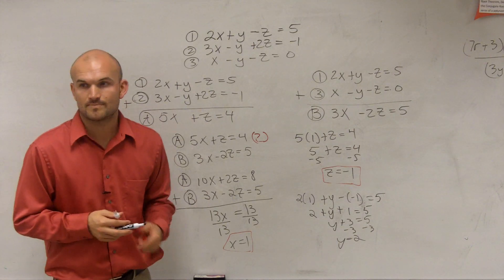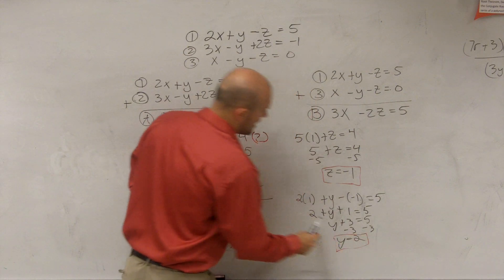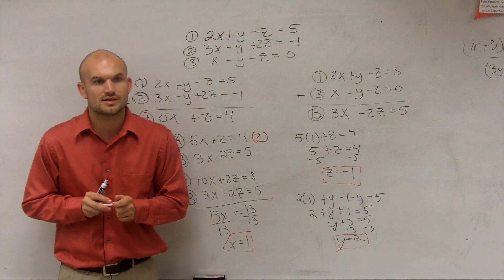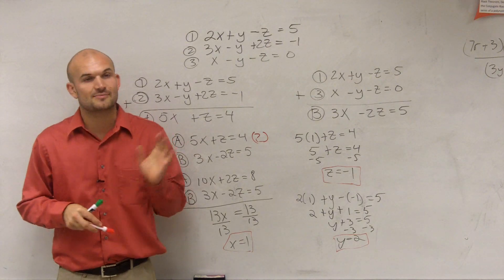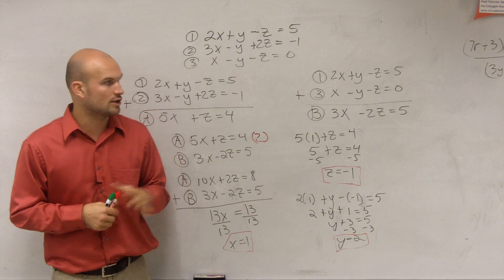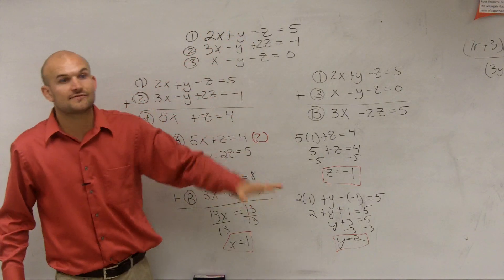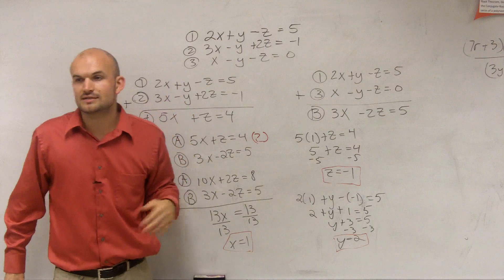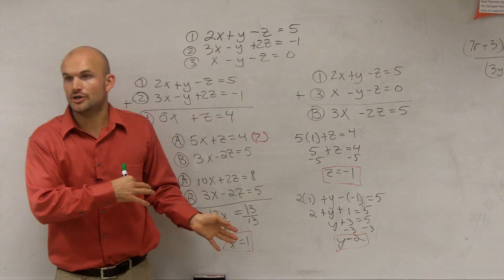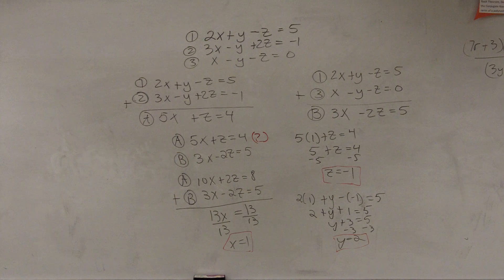Everybody got that? So your solution is x equals 1, z equals negative 1, y equals 2. It's a process, and it's very common to make mistakes. You've got to be diligent about all your work and always go back and double-check, because there's a lot going on. Remember elimination — did that help?